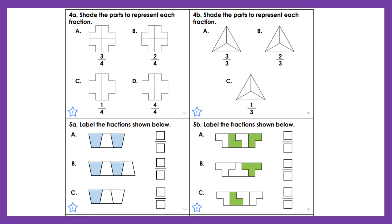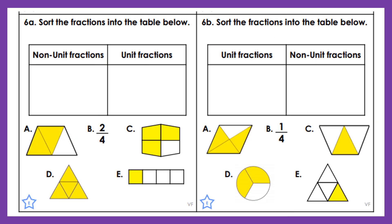Now it's your turn. Remember, the denominator tells us how many parts there are altogether and it goes on the bottom. The numerator tells us how many parts are shaded and it goes on the top. Pause the video, find this slide in your work pack and have a go. Unit fractions always have a 1 for the numerator, and non-unit fractions always have a number which is greater than 1 for the numerator. Work out what fraction each image is and have a go.